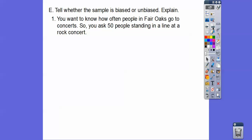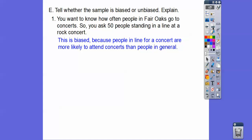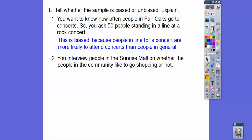Tell whether the sample is biased or unbiased and explain. You want to know how often people in Fair Oaks go to concerts. So you ask 50 people that are standing in line at a rock concert. Is that biased or unbiased? That's totally biased, because people in line for a concert are going to be more likely to attend concerts than people in general. Like my grandpa doesn't go to concerts anymore. I don't go to concerts anymore. I go to bed a little earlier than those rock concerts, but I did when I was your age.